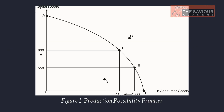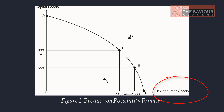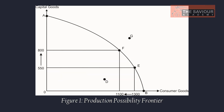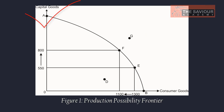Consider the following figure. On the Y-axis, we measure the quantity of capital goods produced; on the X-axis, we measure the quantity of consumer goods. All points below and to the left of the curve represent combinations of capital and consumer goods that are possible given available resources and existing technology. Points above and to the right, such as point G, represent combinations that cannot be reached. If an economy ends up at point A, it would be producing no consumer goods at all.